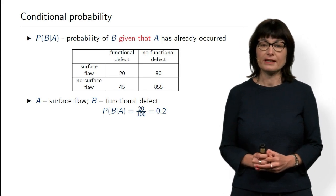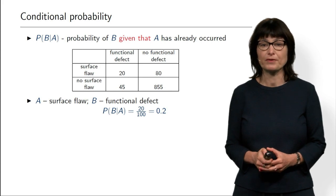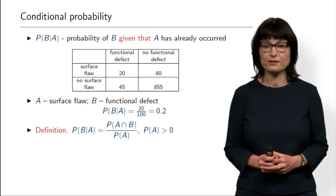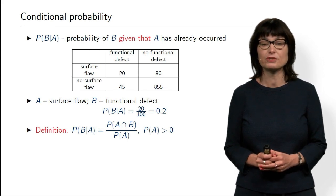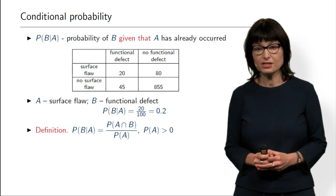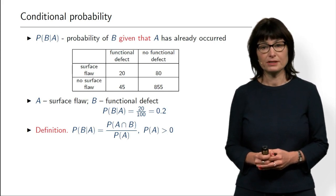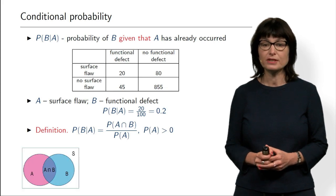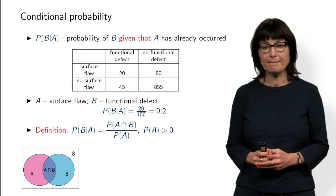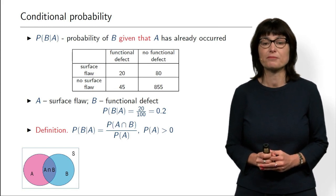Here is this example again, and now we are ready to consider the formal definition of conditional probability. The probability of B given A is the probability of the intersection divided by the probability of A. You remember what intersection is? So let's see how it looks in the picture. We have two events, A and B, in an event diagram, and we have an intersection.